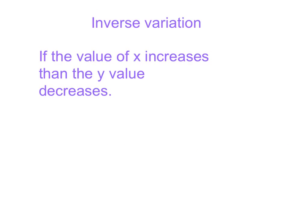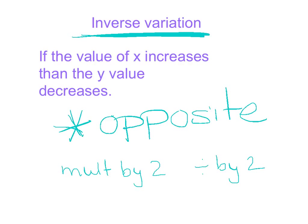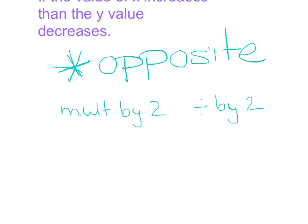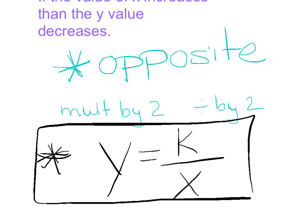Our second topic is inverse variation. This time you'll notice if the X value increases, then the Y value decreases. The two functions are opposite. If one value is multiplied by 2, then the second value is going to be divided by 2 — in inverse variation, we should be doing the opposite idea. So the formula we want to memorize is Y equals K divided by X. Direct was Y equals K times X; inverse is Y equals K divided by X. And K is still that constant of proportionality.